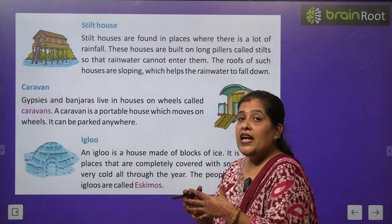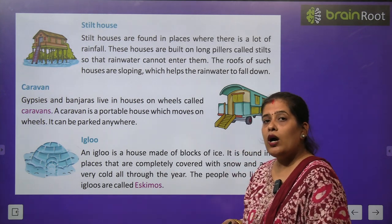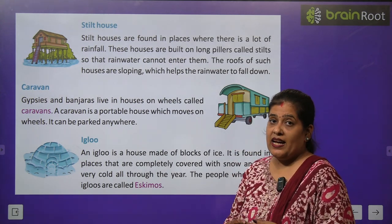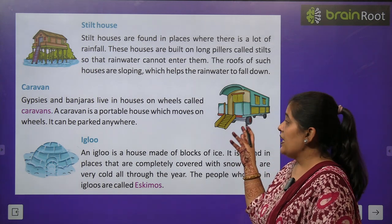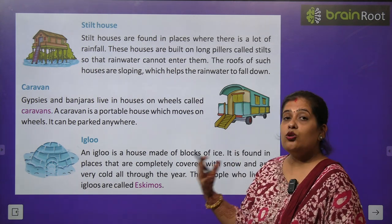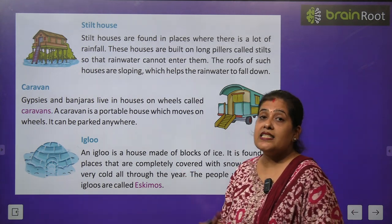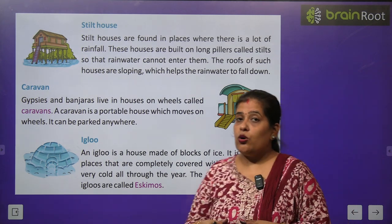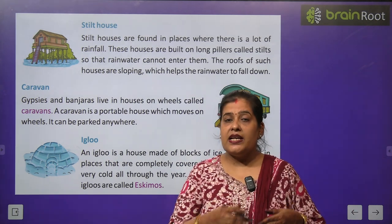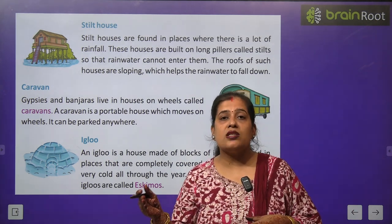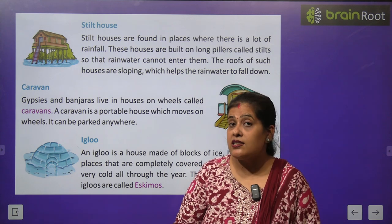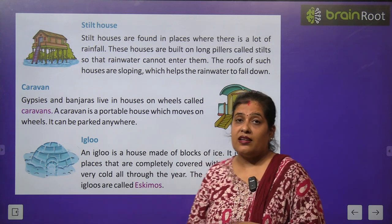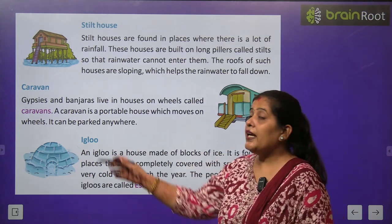Now we will learn about caravan. Caravan को हम house on wheels भी कहते हैं — जिसे हम easily एक जगह से दूसरी जगह ले जा सकते हैं. जो लोग circus का शो करते हैं, जो एक शहर से दूसरे शहर में जाते हैं, वो इस तरह के houses का use करते हैं.